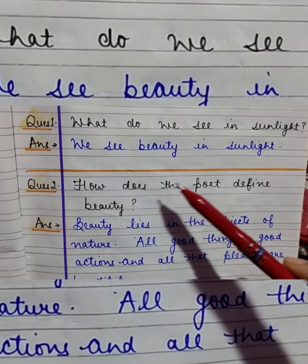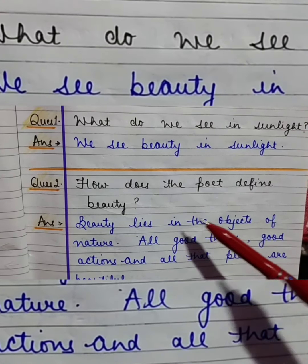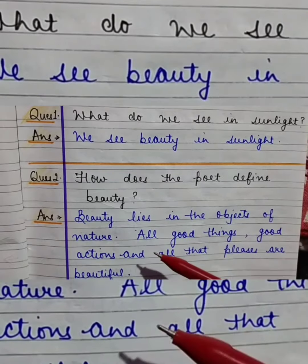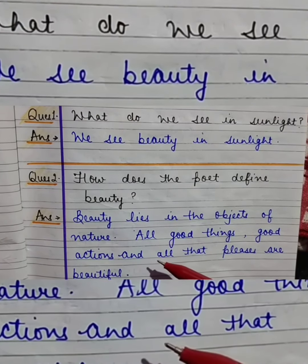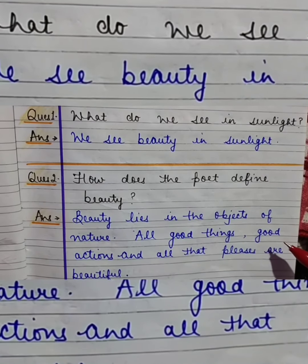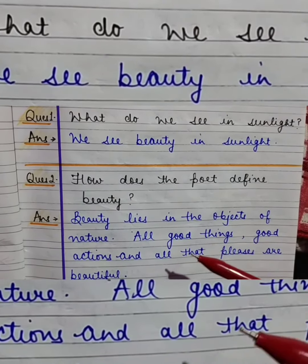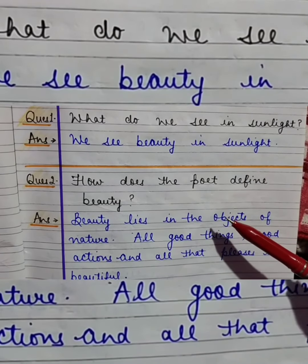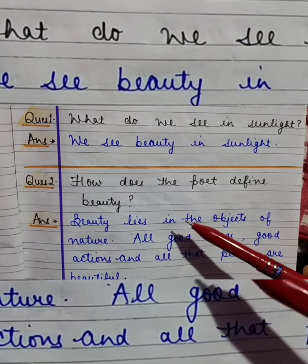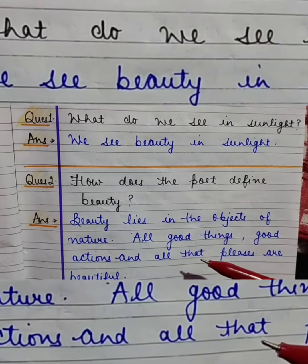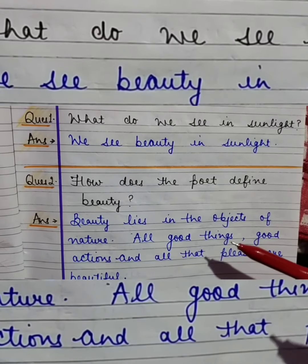Question number two: How does the poet define beauty? Answer: Beauty lies in the objects of nature. All good things, good actions, and all that pleases are beautiful. The poet has classified beauty into two types: first, beauty of nature, and second, a person's inner beauty.